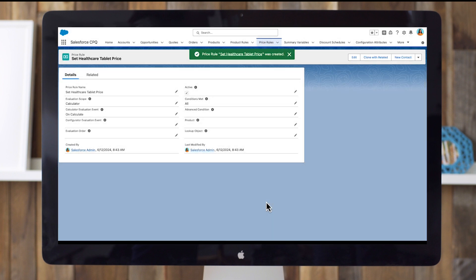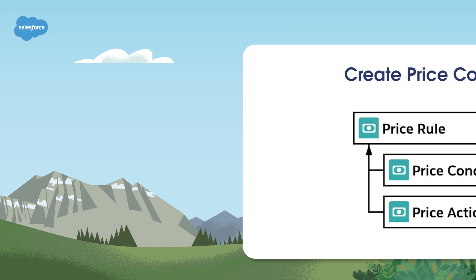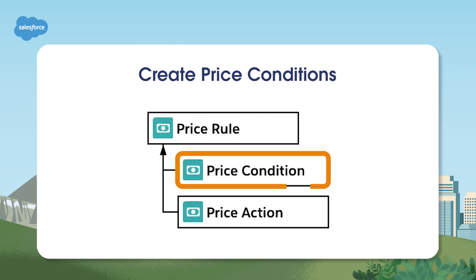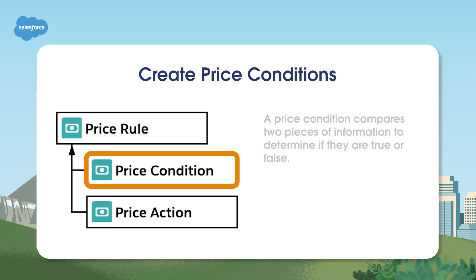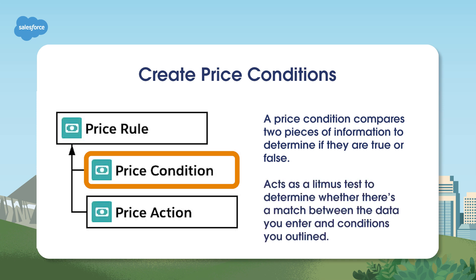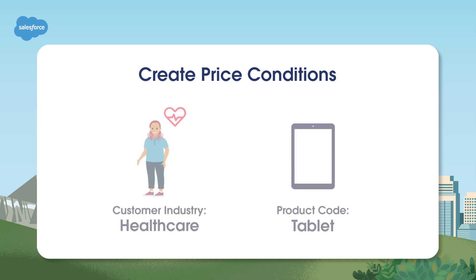Nice work! You've just created a price rule. Let's move on to the second step: creating price conditions. A price condition compares two pieces of information to determine whether they're true or false. It acts as a litmus test to determine whether there's a match between the data you enter and the conditions you outlined. Today, we'll create two price conditions: the first to indicate healthcare as the customer's industry, and the second to indicate the tablet as a product code.